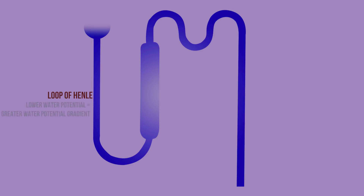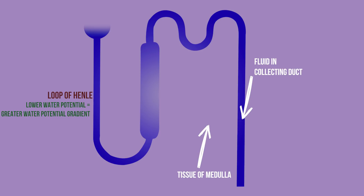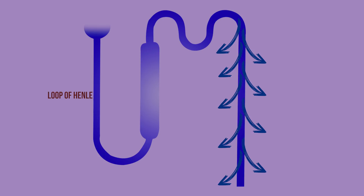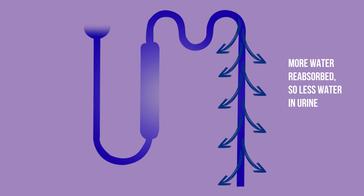The lower the water potential the loop of Henle can build up, the greater will be the water potential gradient between the fluid inside the collecting ducts and the tissues outside the duct. This enables more water to be drawn out of the collecting duct, resulting in a smaller volume of more concentrated urine.